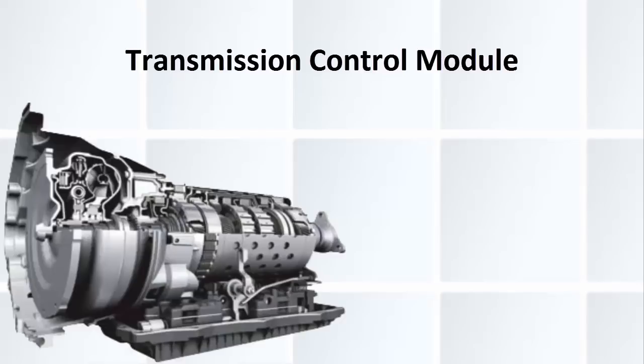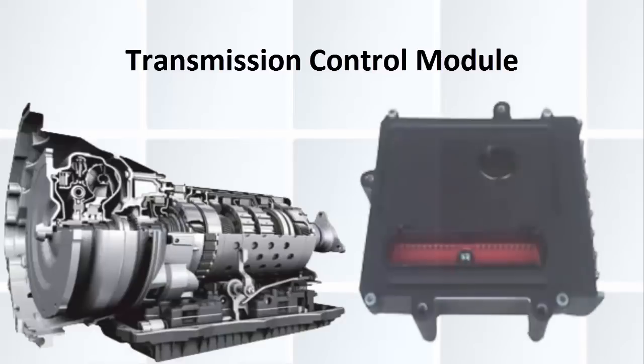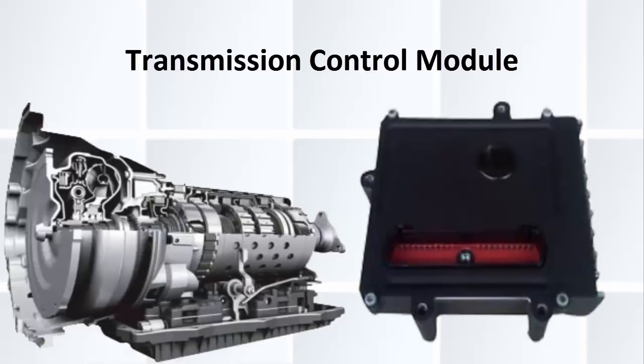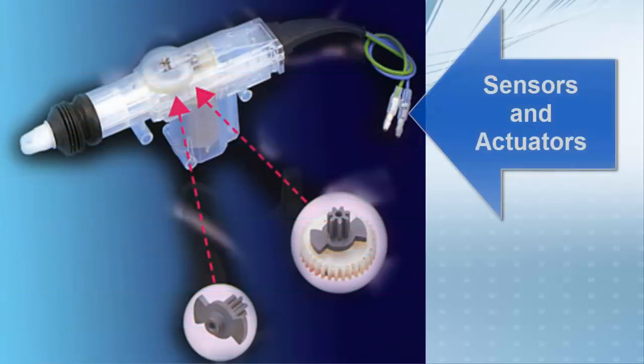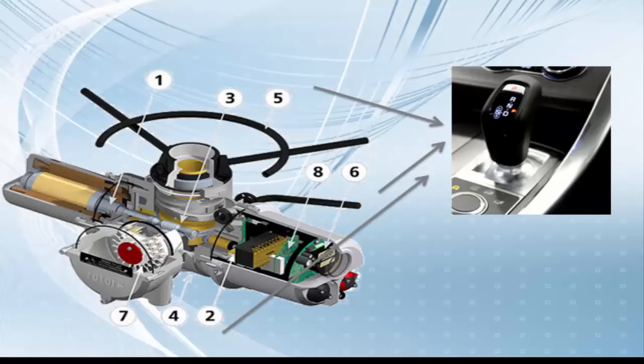Hi friends, let's know more about the function and responsibility of transmission control module. Its first and foremost responsibility is to get information from sensors and run certain actuators that engage gears.